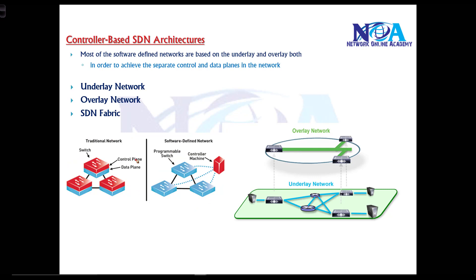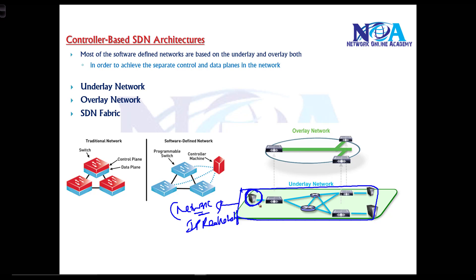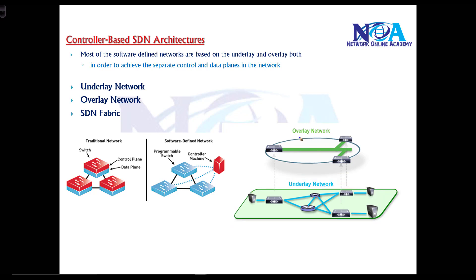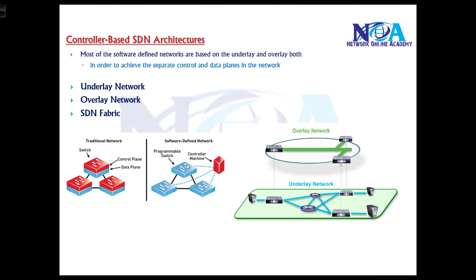The underlay is the actual physical network being built, providing end-to-end IP reachability. For example, if a server or computer needs to reach another endpoint, we ensure end-to-end reachability — that is an underlay network. The overlay network is a virtual network built on top of the underlay infrastructure. SDN fabric refers to the devices used in this architecture.